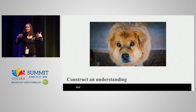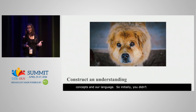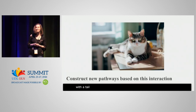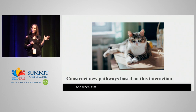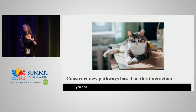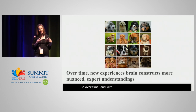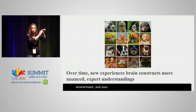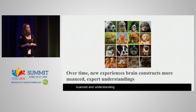So our emotions are constructed in the same way as our concepts and our language. Initially, you didn't have a whole lot of experience with dogs, so the next time you saw another furry, four-legged creature with a tail — such as a cat — you may have tried to play catch with it, you may have tried to pet it. And when it meowed and licked its fur and snubbed you and walked away, you started to then construct another understanding of this new creature in the environment, and you started to label it cat. So over time and with more experience, you began to gain new understandings of your environment, and your brain literally started to construct more nuanced, expert understandings — more nuanced and expert neural networks based on your interaction with the environment.